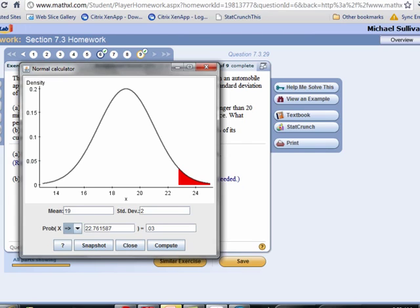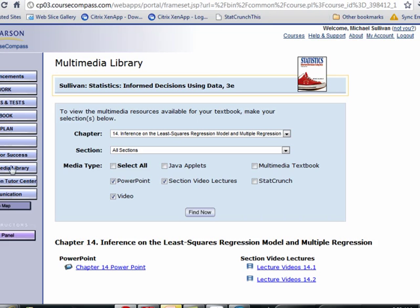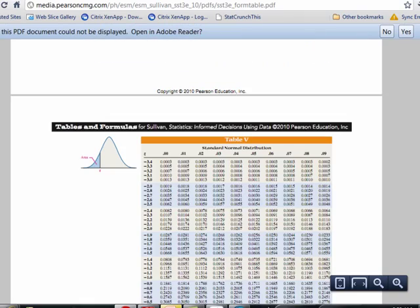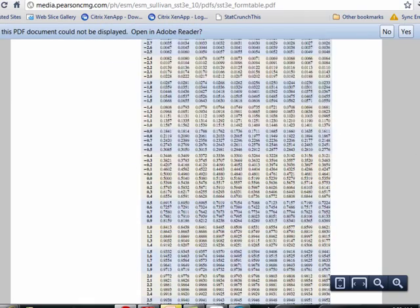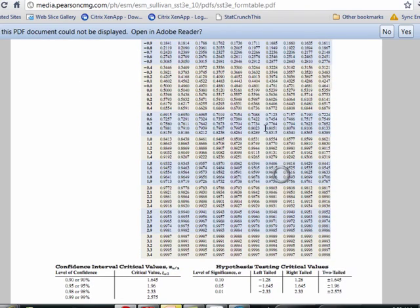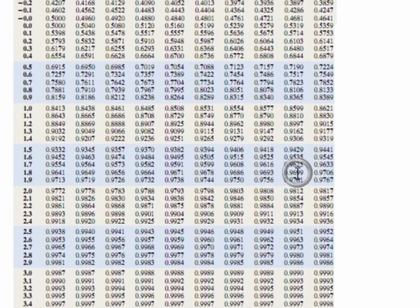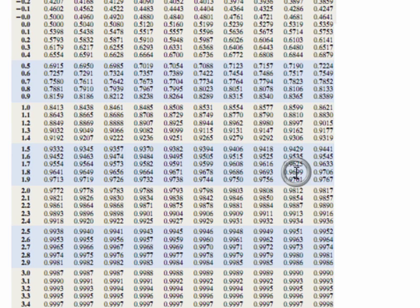So if we're doing this by hand, we're going to look for the area to the left of 0.97. What you would have to do, we might as well do this for fun. If we're doing this by hand, I've got to go to my normal table. So 0.97, 0.9, there I got 0.9699 right there. And that corresponds to a Z value of 1.88.